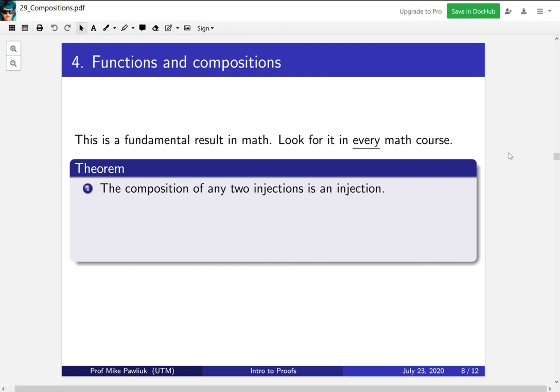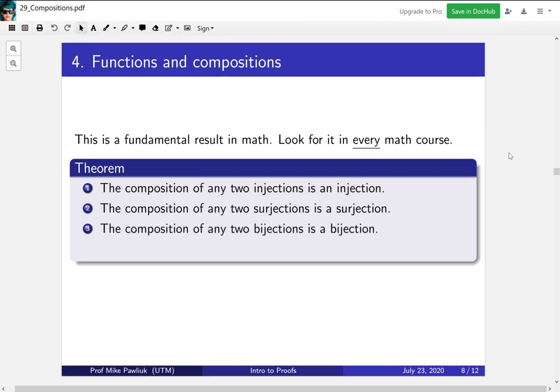There's four parts of this. The first part is that if you compose any two injections you'll get an injection, so long as it's defined. The second one is that the composition of two surjections is a surjection. The composition of any two bijections is a bijection. And the fourth one is a secret, and I'll tell it to you later. It's a bit distracting, so we're going to focus on these first three.